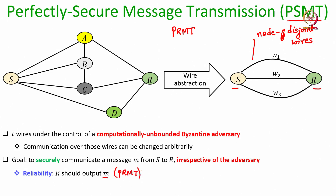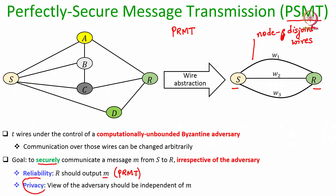But in the PRMT protocol it is fine if the adversary learns the message. In fact, in the naive PRMT protocol where the sender simply sends its message over all N channels, the adversary will also be knowing the sender's message. There the goal was not privacy, the goal was only reliability. But now in the PSMT problem we also have another goal namely privacy: whatever information the adversary sees over the T wires should be independent of the sender's message.